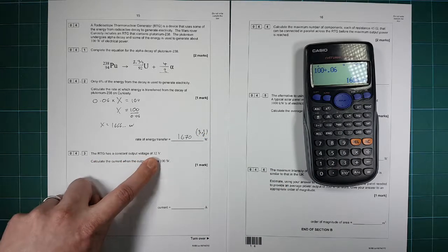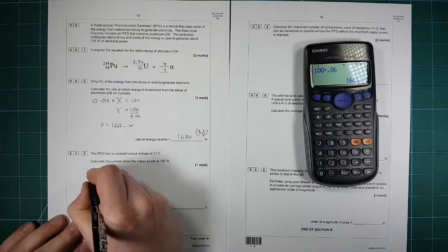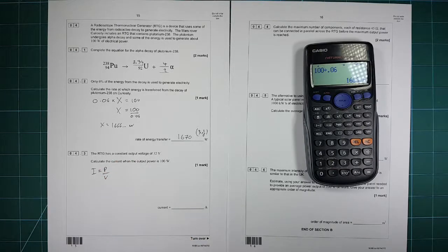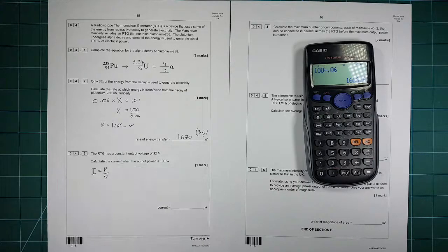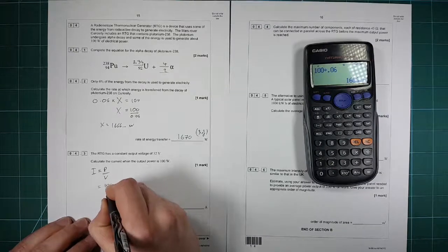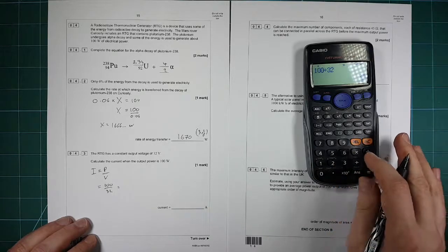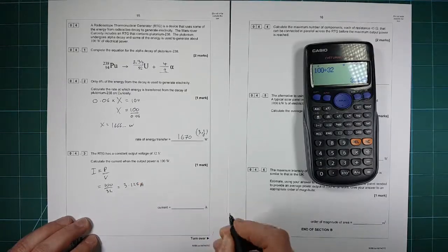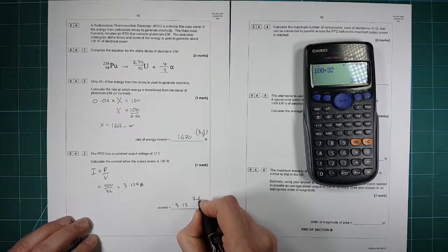It has a constant output voltage of 32 volts. Calculate the current. Again, dead easy. You need the equation for power, so power equals V times I. Rearranged, I equals P over V, which is equal to 100 divided by 32, which is 3.125, and the units are amps. So 3.13 amps to 3 s.f.